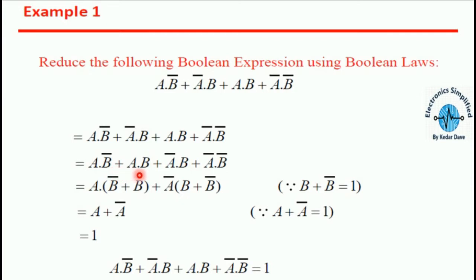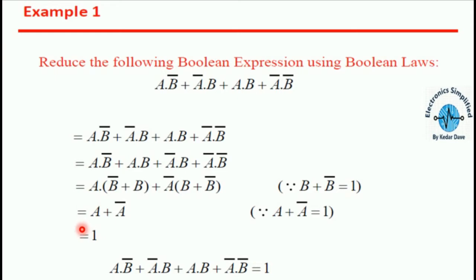We see that a·b̄ and a·b are brought together. Why? Because we take out 'a' as common and then apply the property b + b̄ = 1 to this equation. Likewise, we get a + ā which equals 1. So it is proved that a·b̄ + ā·b + a·b + ā·b̄ = 1.